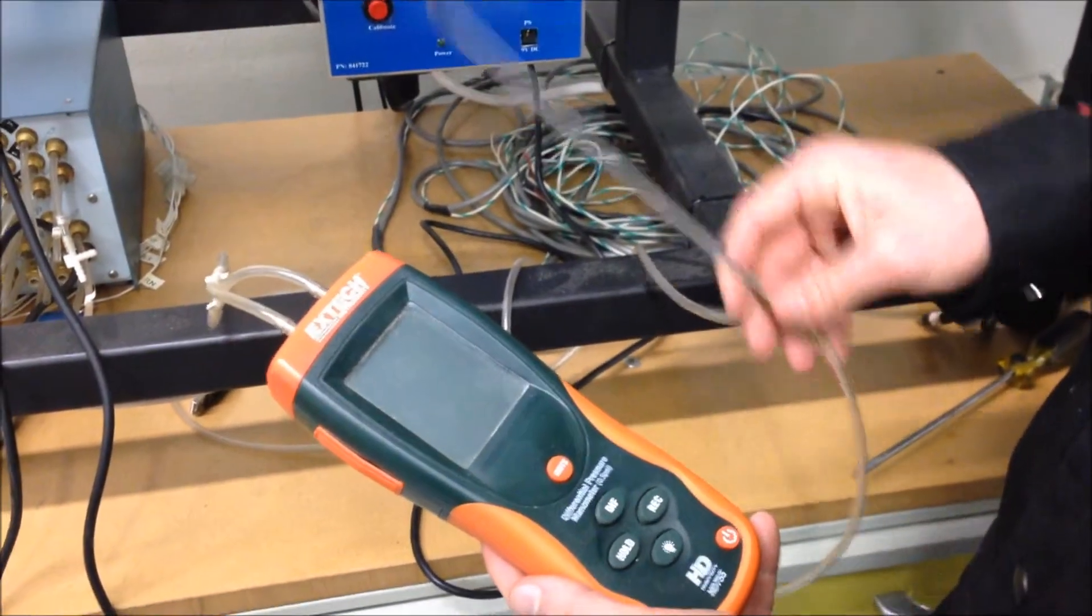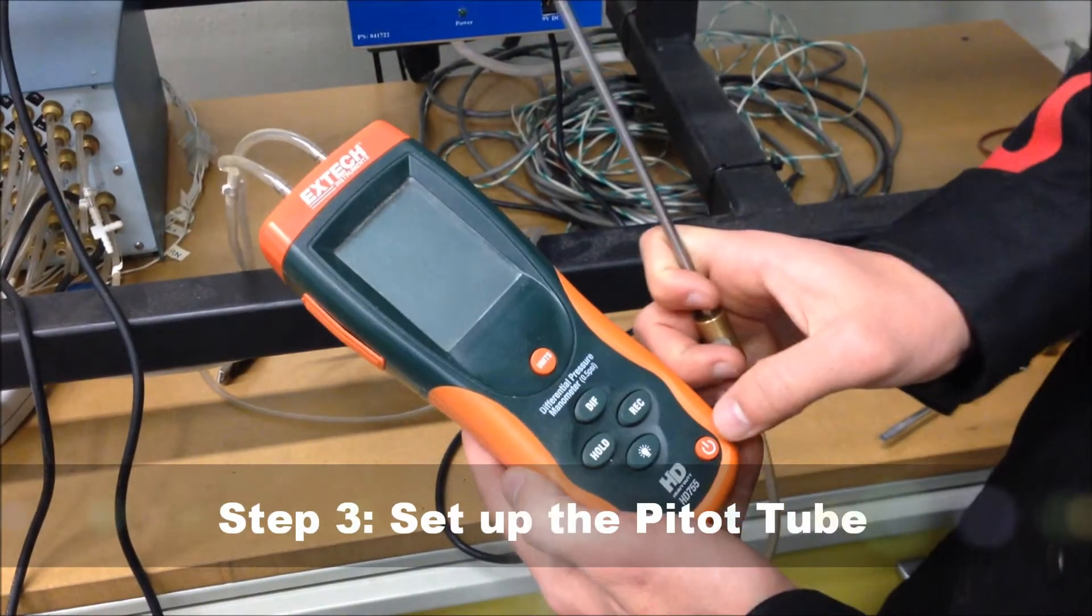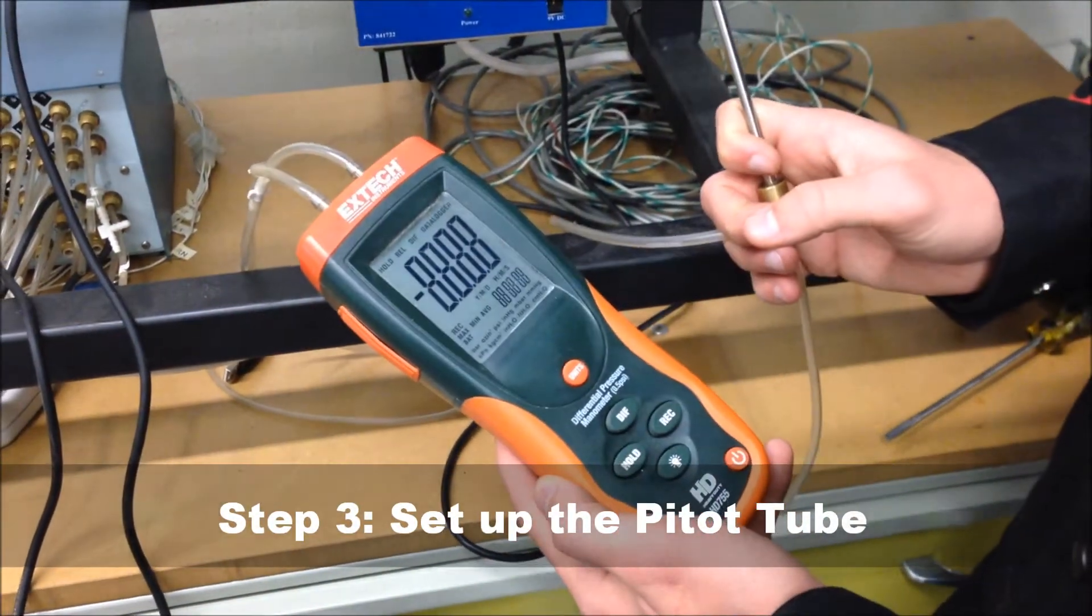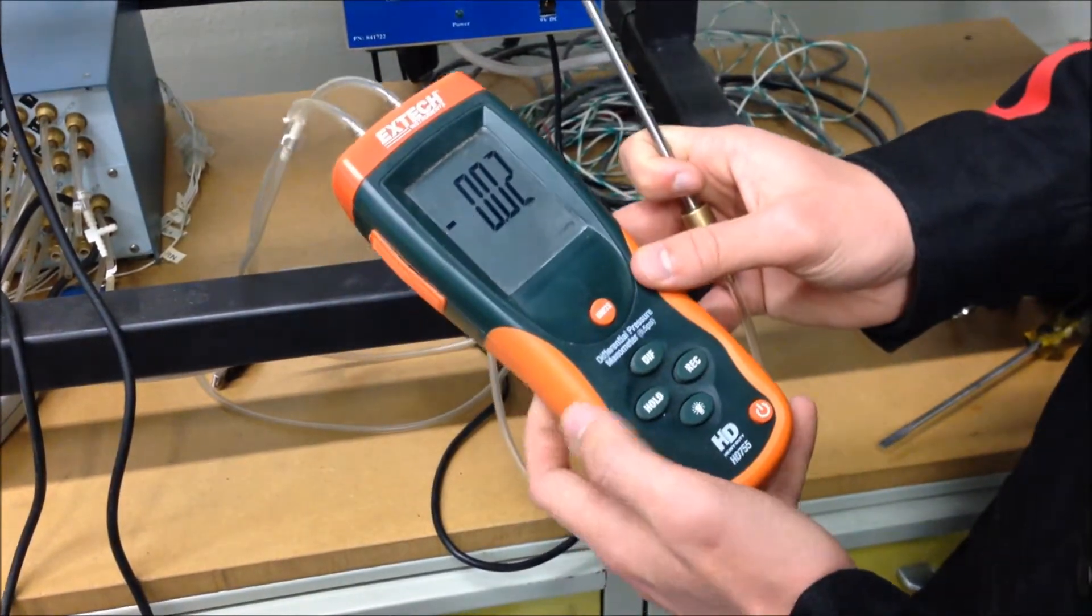Next, assemble your PETA tube by connecting it to the differential pressure manometer. Turn it on by pressing this button.